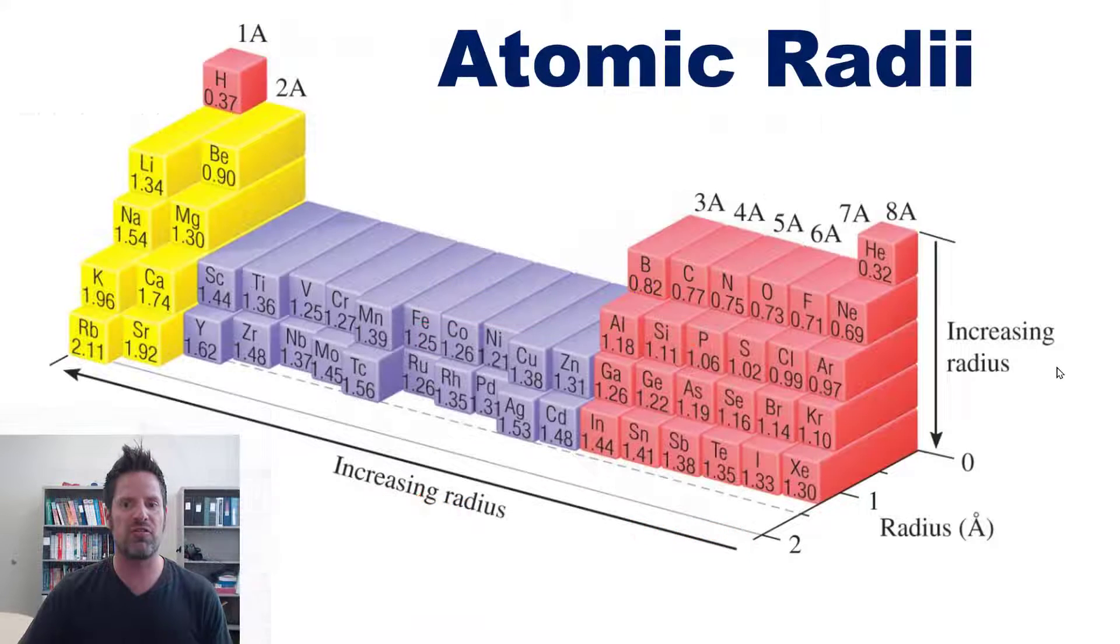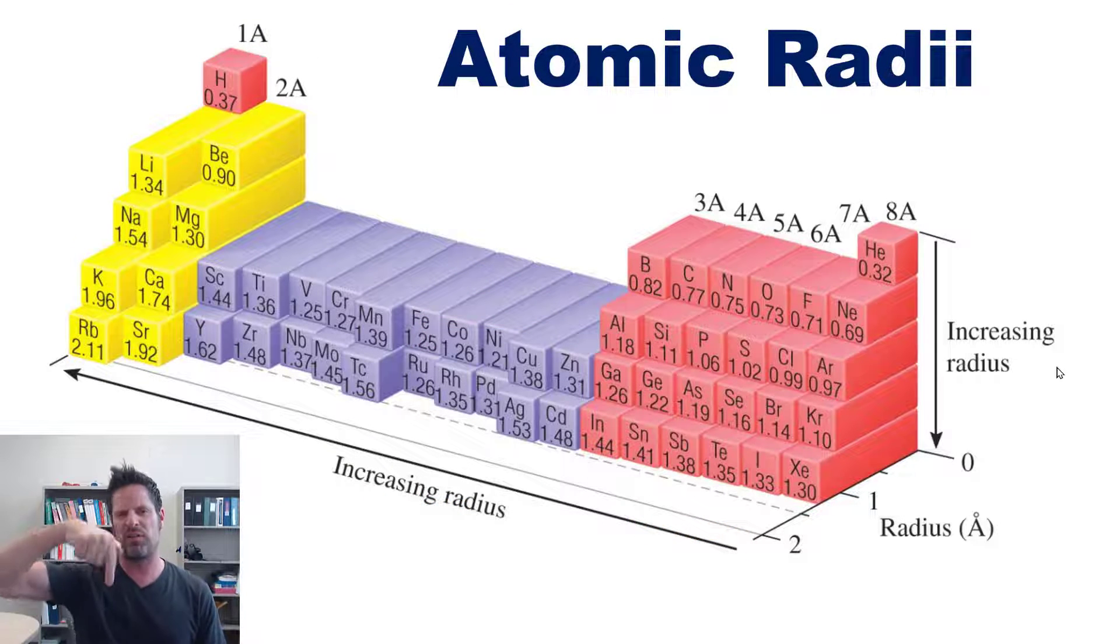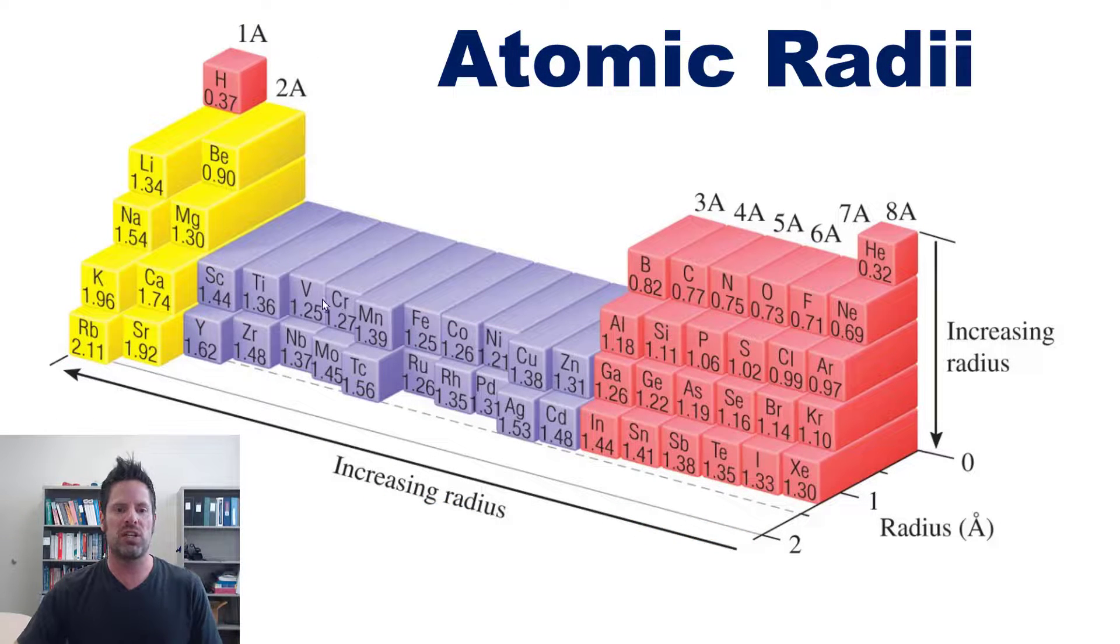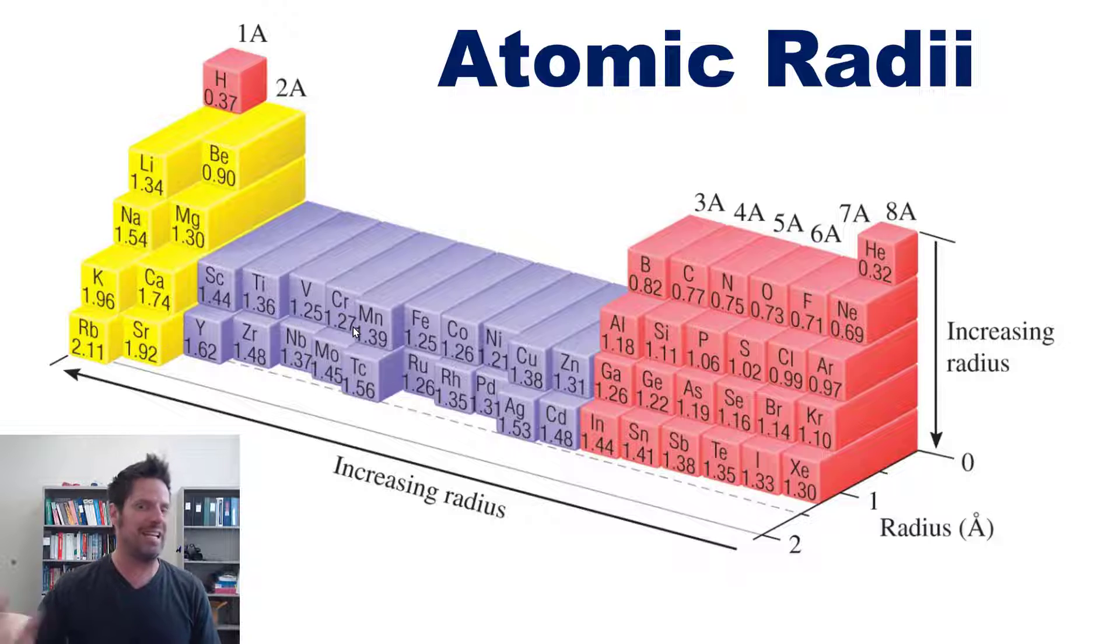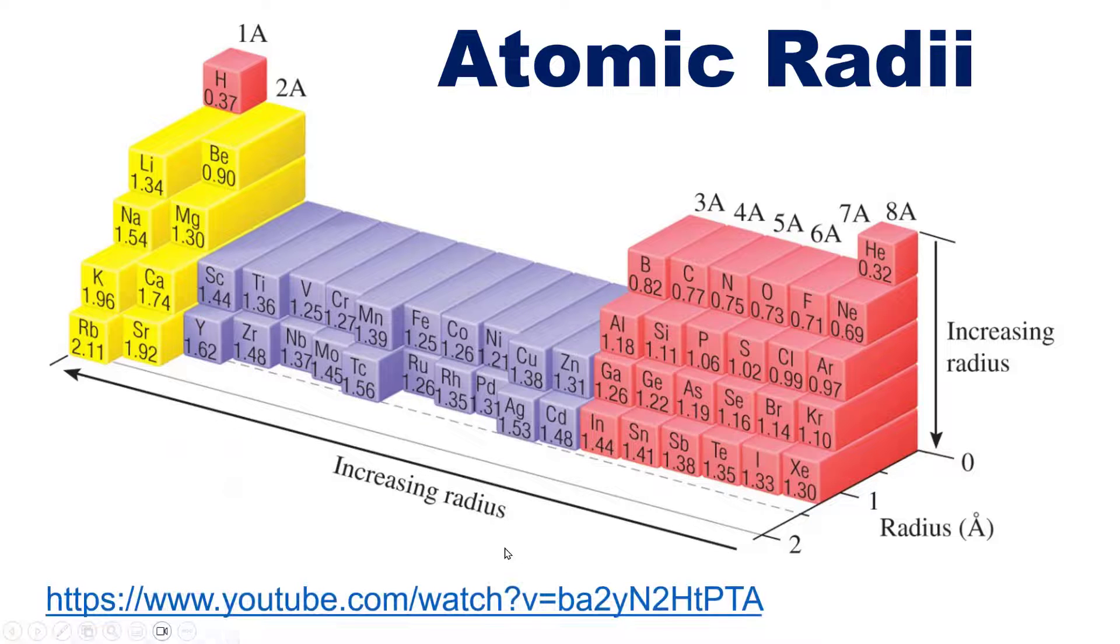For your reference, this figure taken from our text shows us empirically measured values in angstroms of the atomic radii of all of the elements here on this slide. Additionally, here's a link that I will post in the description below to a separate video done by some other YouTube channel that shows off individual atomic radii and their trend on the periodic table beautifully.